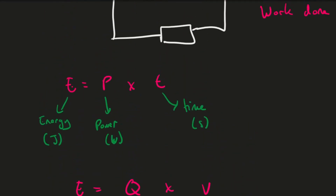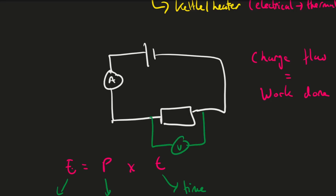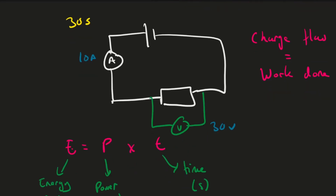To work out the amount of energy transferred, let's place an ammeter in our circuit and a voltmeter across our component and take readings. Say the ammeter reads 10 amps and the voltmeter reads 30 volts. That's still not enough — we also need to know how long the circuit is switched on for, so let's say it's switched on for 30 seconds.